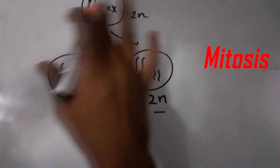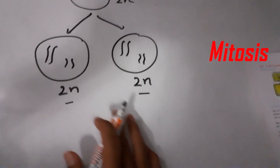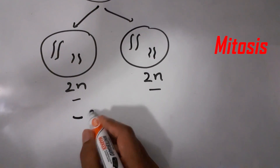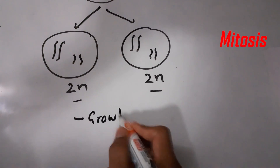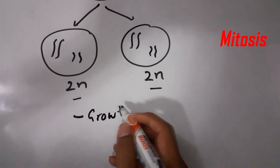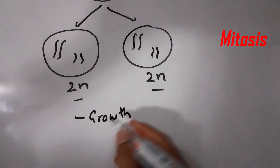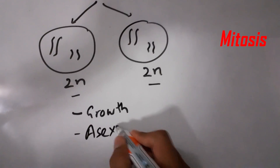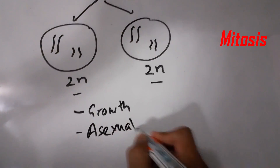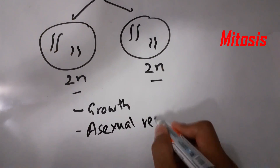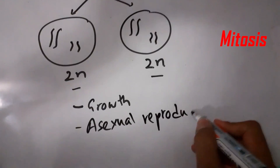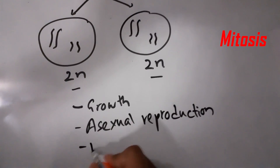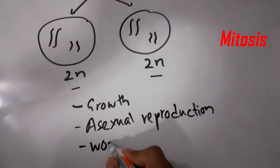The significance of mitosis is that it is usually used for the growth of multicellular organisms, for asexual reproduction, and for wound healing.